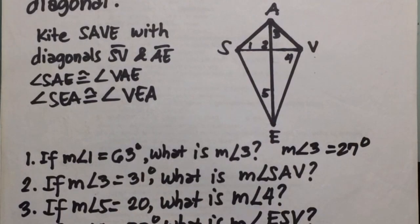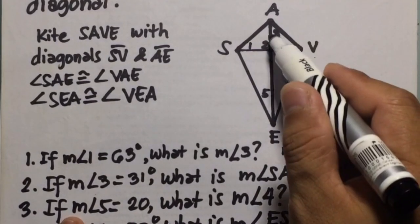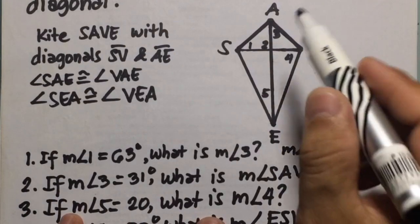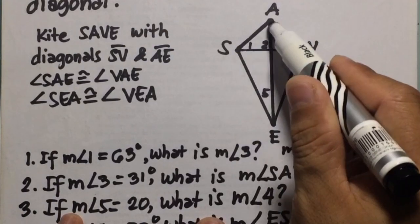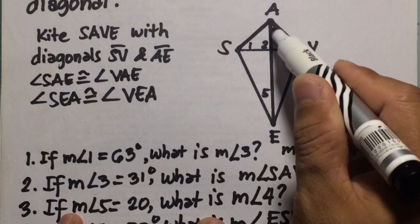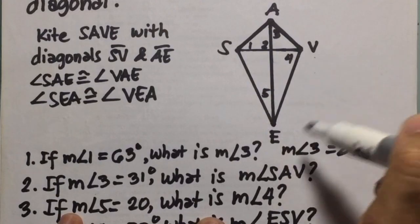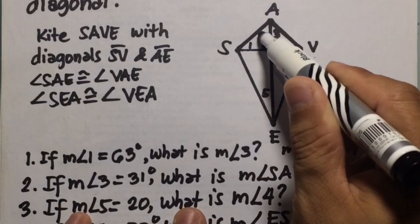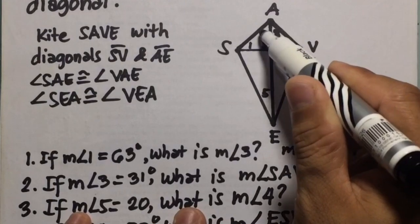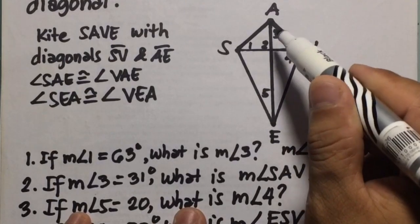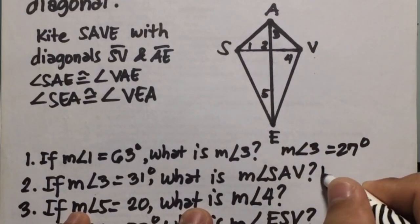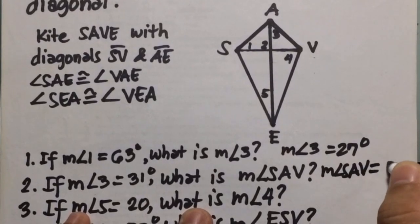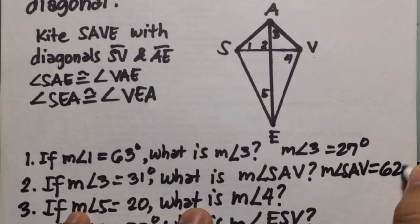Number two: if the measure of angle 3 is 31, what is the measure of angle SAV? If this is 31, it means that the other congruent part is also 31. So 31 plus 31 equals 62. Therefore, the measure of angle SAV is equal to 62 degrees.